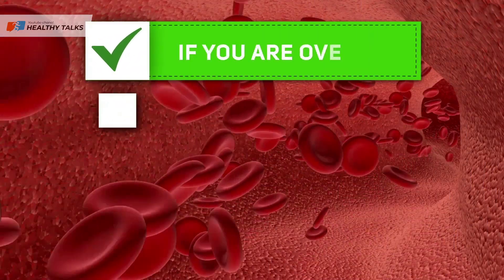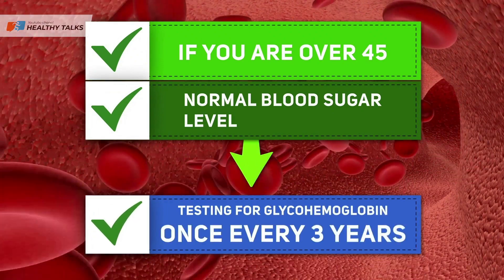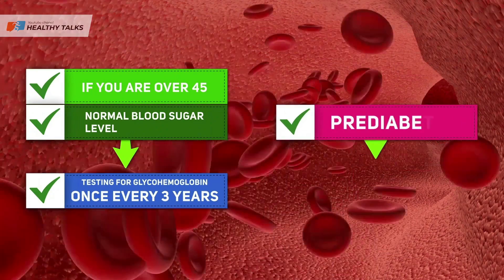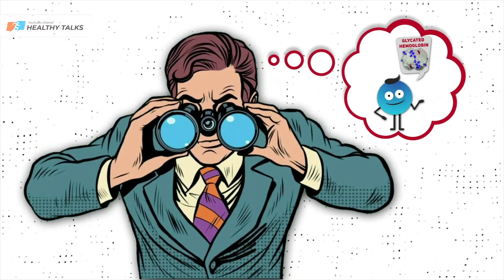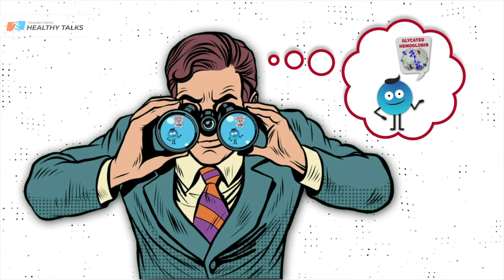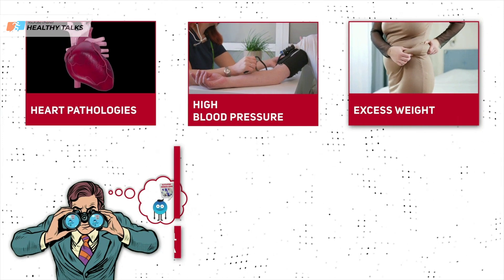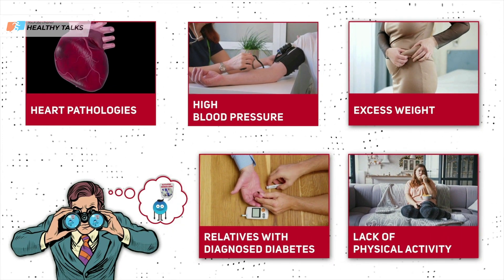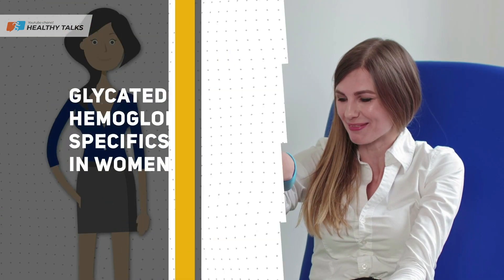If you are over 45 years old and have normal blood sugar levels, it is recommended to test blood for glycohemoglobin every three years. If you have diabetes, at least once a year regardless of age. Monitoring glycated hemoglobin is recommended if you are overweight, have high blood pressure, heart abnormalities, relatives with diagnosed diabetes, or lack of physical activity.